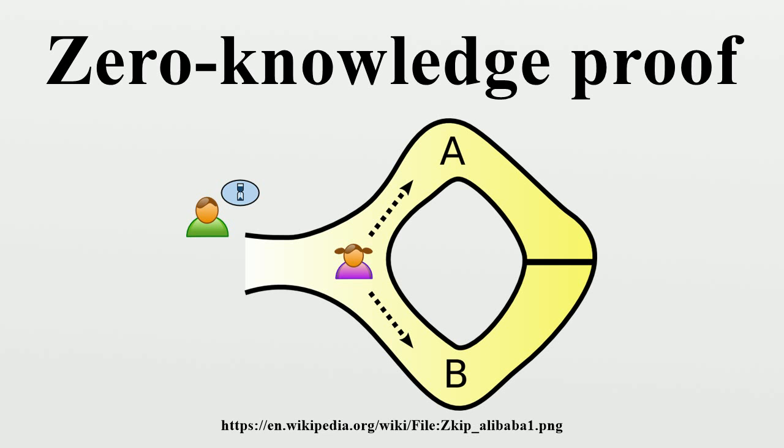Definition. A zero-knowledge proof must satisfy three properties. Completeness: If the statement is true, the honest verifier will be convinced of this fact by an honest prover. Soundness: If the statement is false, no cheating prover can convince the honest verifier that it is true, except with some small probability.